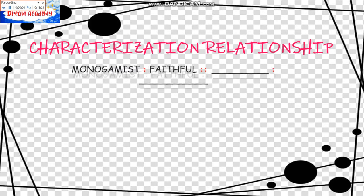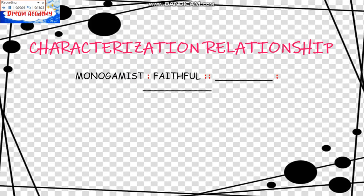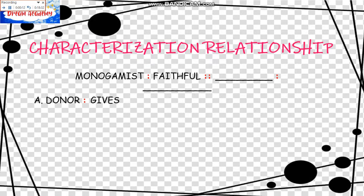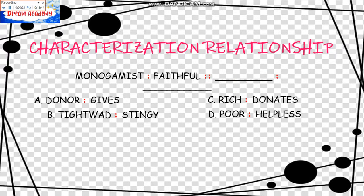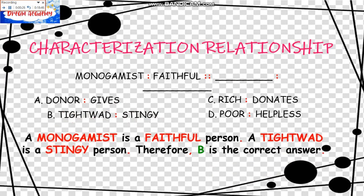We have the Characterization Relationship. Monogamist is to Faithful as blank is to blank. The choices are: Donor is to Gives; Tightwad is to Stingy; Poor is to Helpless; Rich is to Donates. A Monogamist is a Faithful person, and a Tightwad is a Stingy person. Therefore, B is the correct answer.